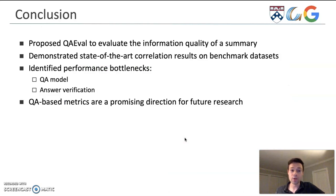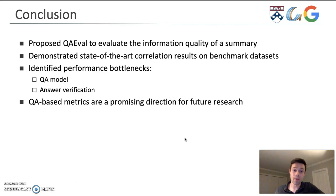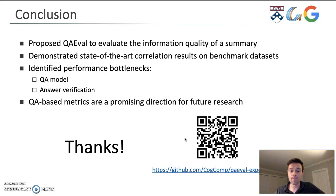To conclude: we propose this QA metric to evaluate the information quality of a summary, we demonstrate it achieves state-of-the-art correlation results on benchmark datasets, and we identify two performance bottlenecks in the QA model and the answer verification step. Our results strongly indicate that QA-based metrics are a promising direction for future research. Thank you.